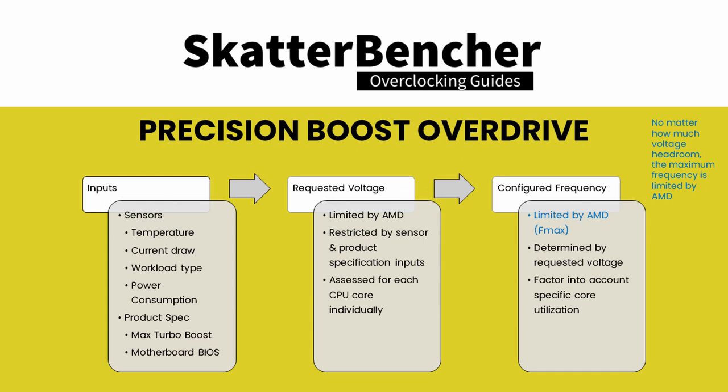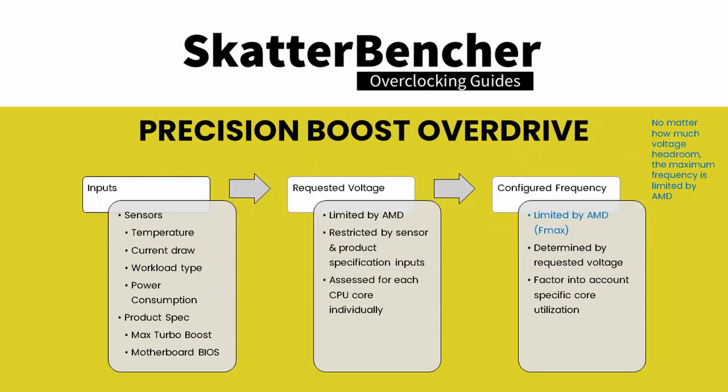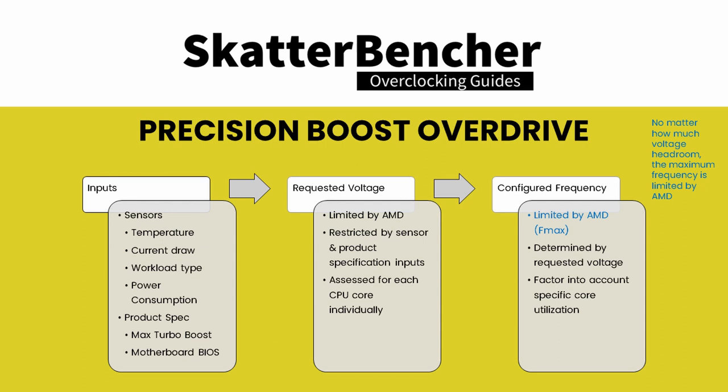So, what is the big brain play I hear you asking? Well, remember when I said the programmed Fmax is the absolute limit? A lie. Sort of. There's a way to offset the maximum turbo boost using an option called Fmax Offset. Fmax Offset is an option that allows you to raise the Fmax ceiling of your processor in steps of 25 MHz up to 200 MHz. So, in the case of the 5600X, Fmax from 4.65 GHz to 4.85 GHz.